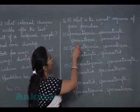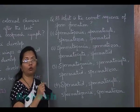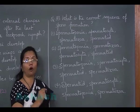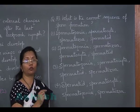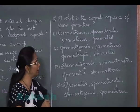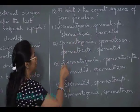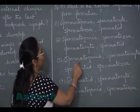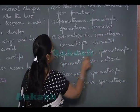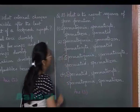In question number 83, we have to find the correct sequence of sperm formation. The sequence starts from spermatogonia, which differentiate to form primary spermatocyte. Primary spermatocyte undergoes meiosis I to form secondary spermatocyte, then meiosis II leads to formation of spermatid, and finally spermatid differentiates into spermatozoa. The correct sequence — spermatogonia, spermatocyte, spermatid, spermatozoa — matches option 3, which is the correct answer.